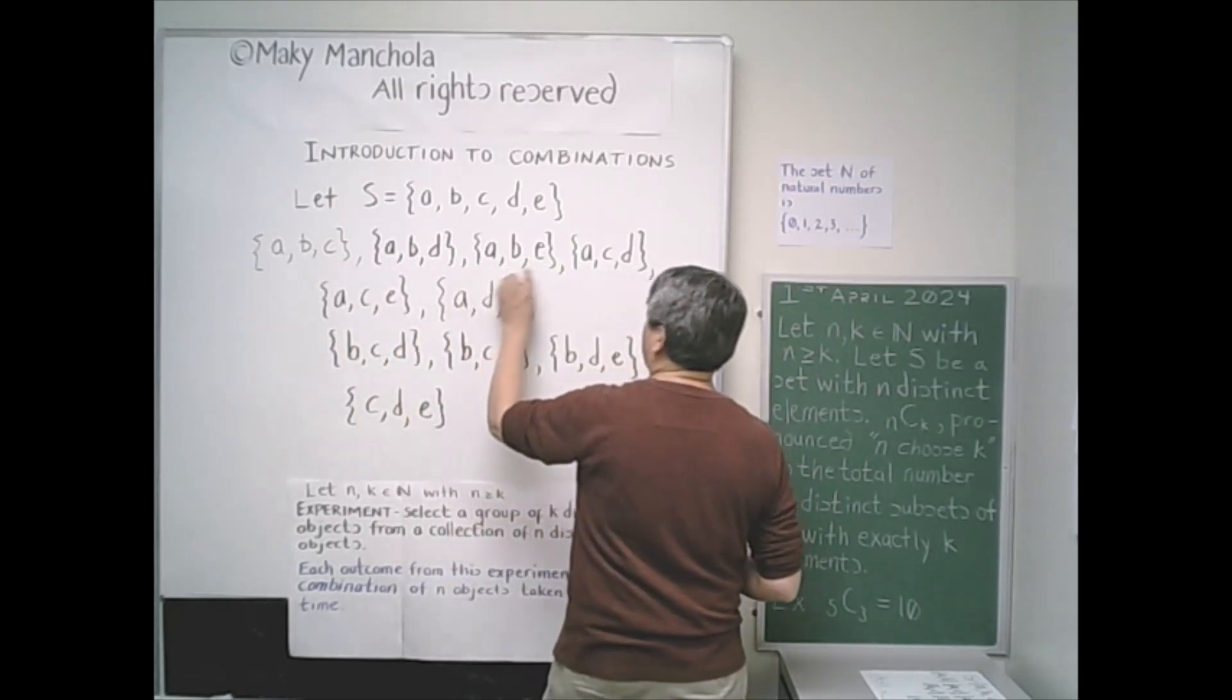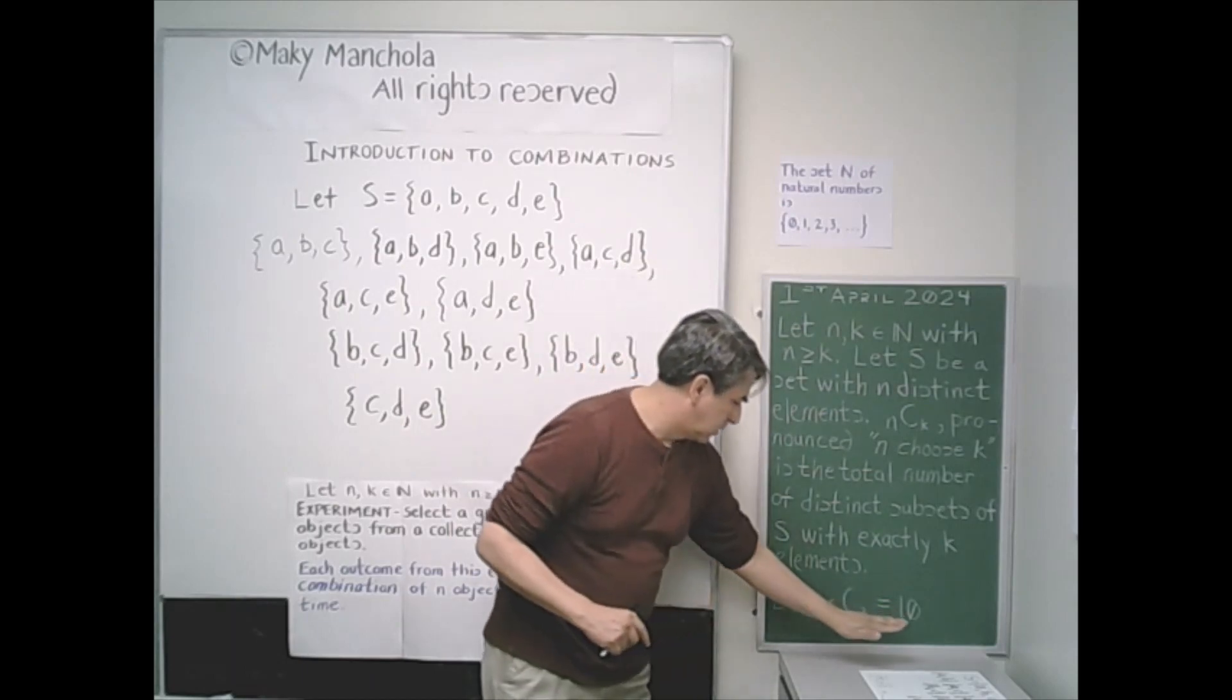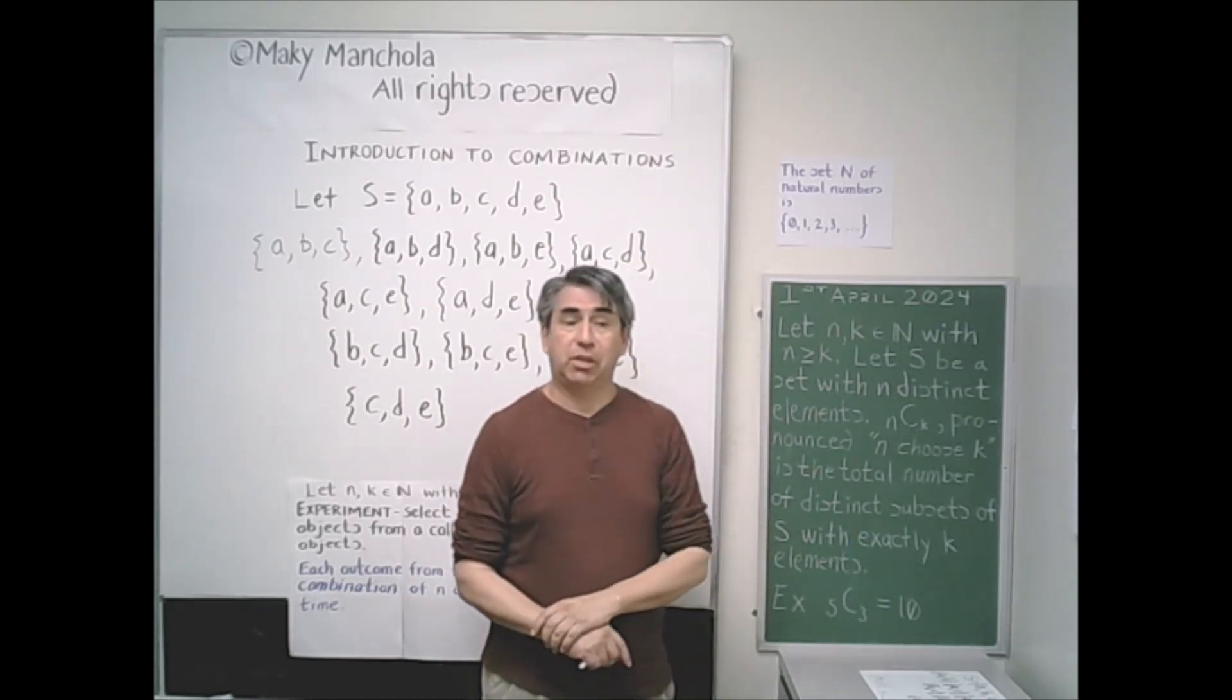One, two, three, four, five, six, seven, eight, nine, ten. So 5 choose 3 equals 10.